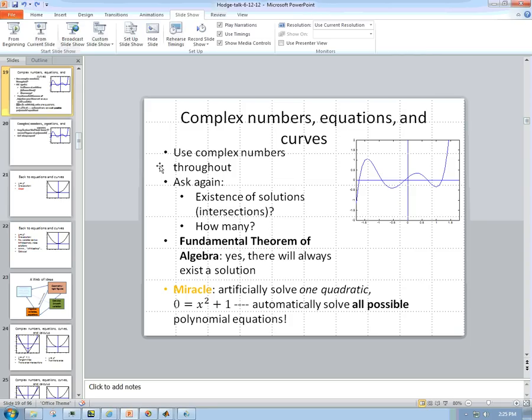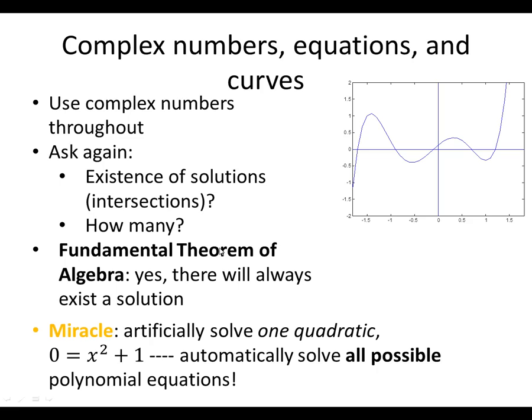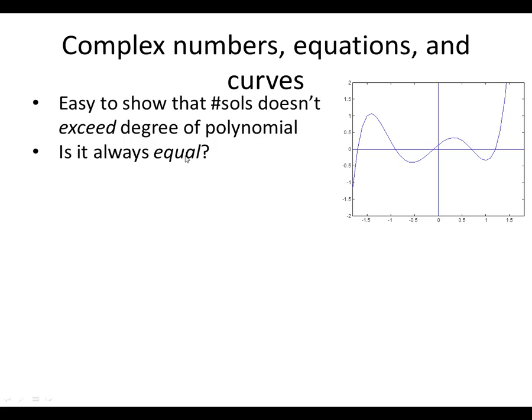So now we've got the fundamental theorem of algebra, which is a great algebra result, but it's also a really cool geometry result that says any polynomial curve of the form y equals a polynomial in x is going to intersect the x-axis. There was this other question of how many intersections we'd have, and we had a conjecture that the number of solutions was equal to the degree of the polynomial.